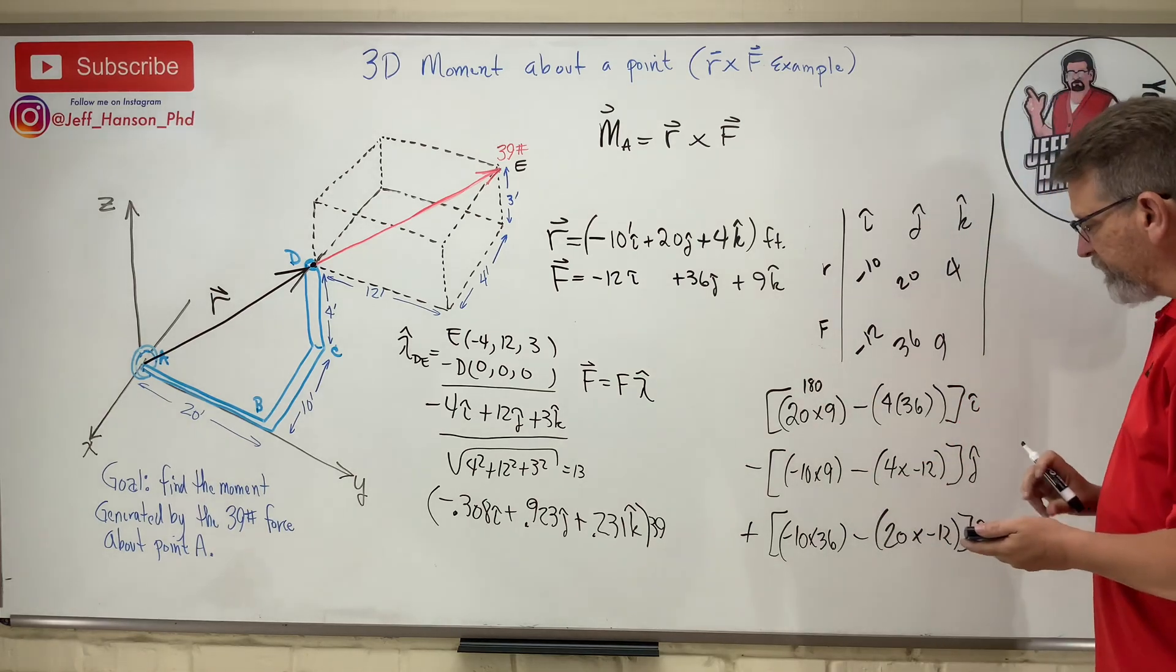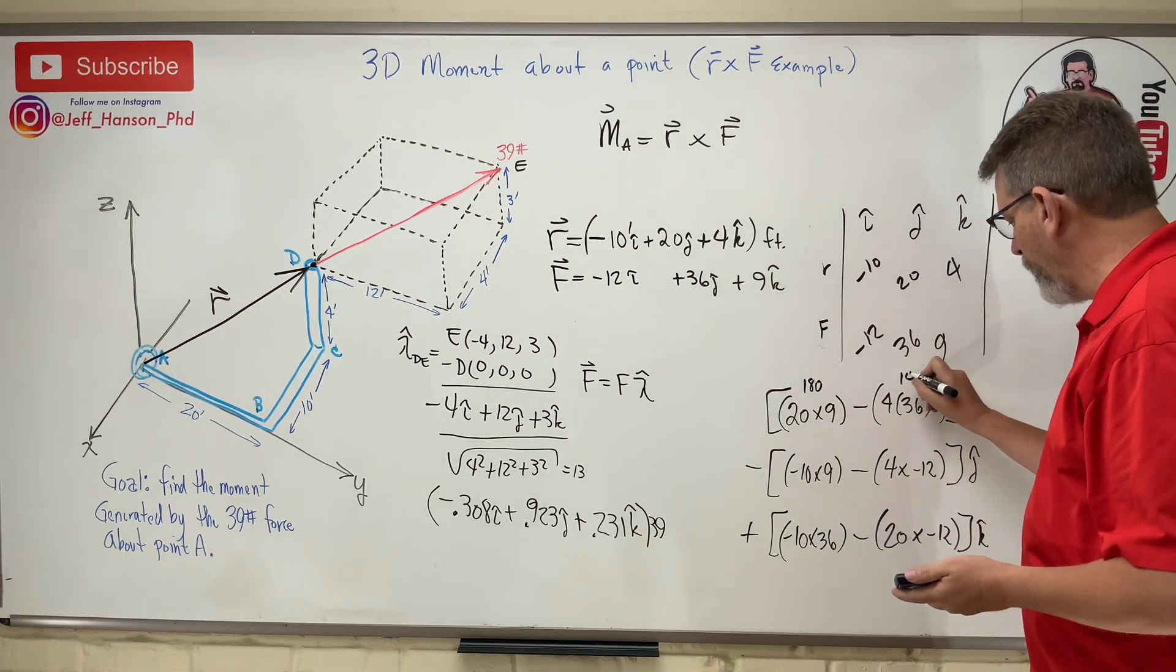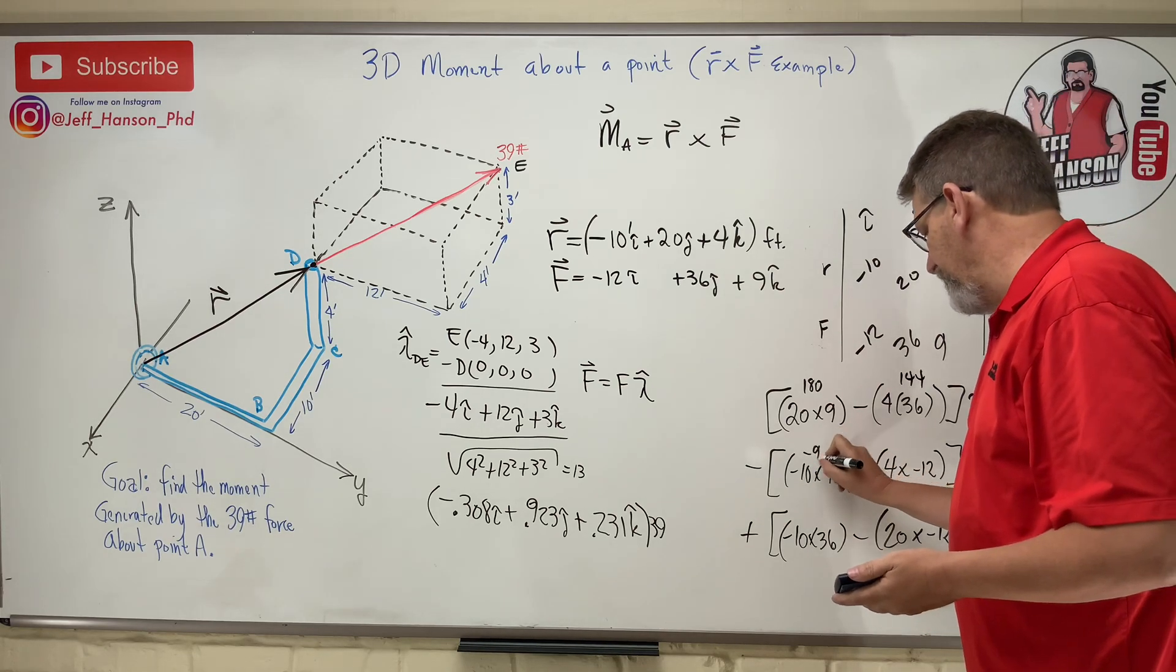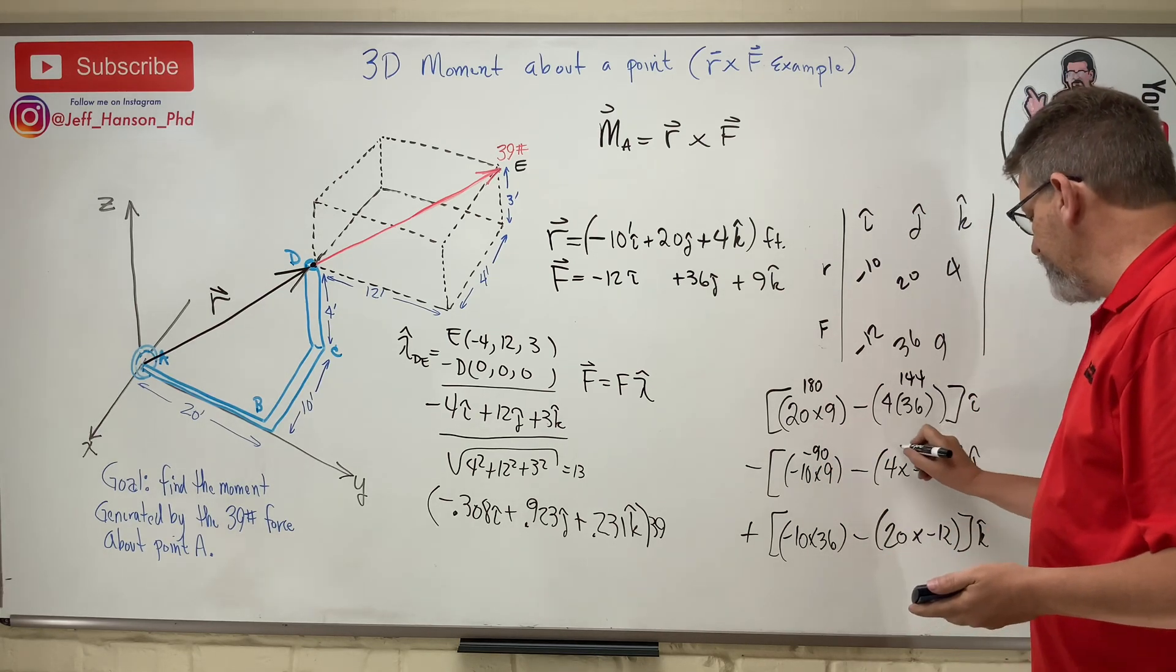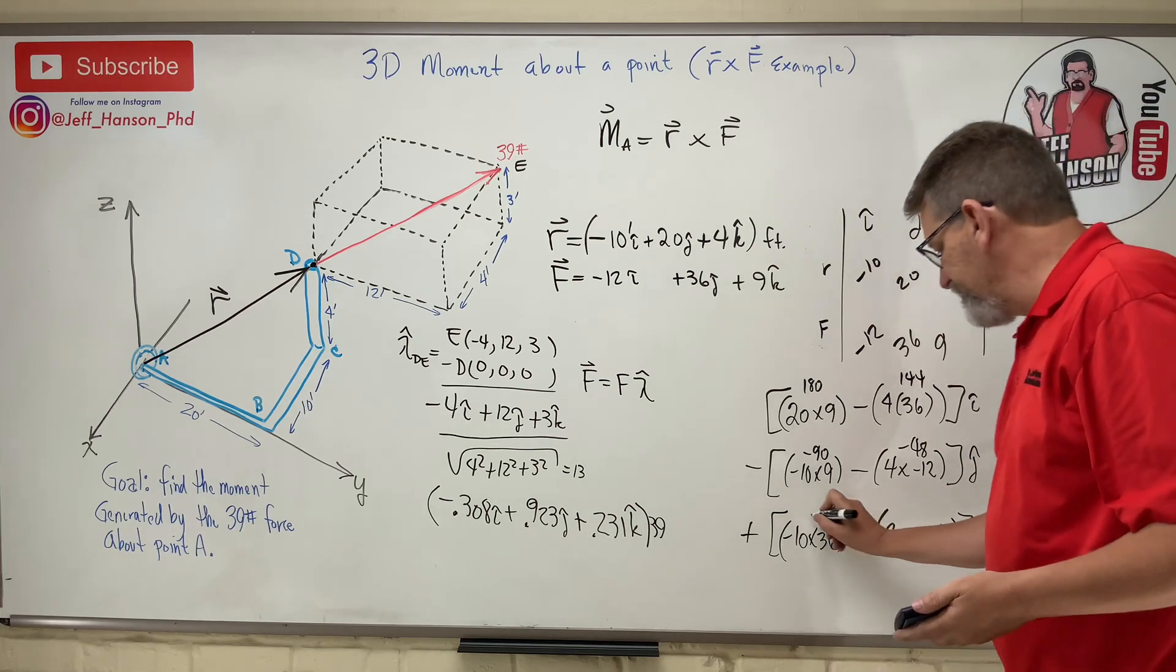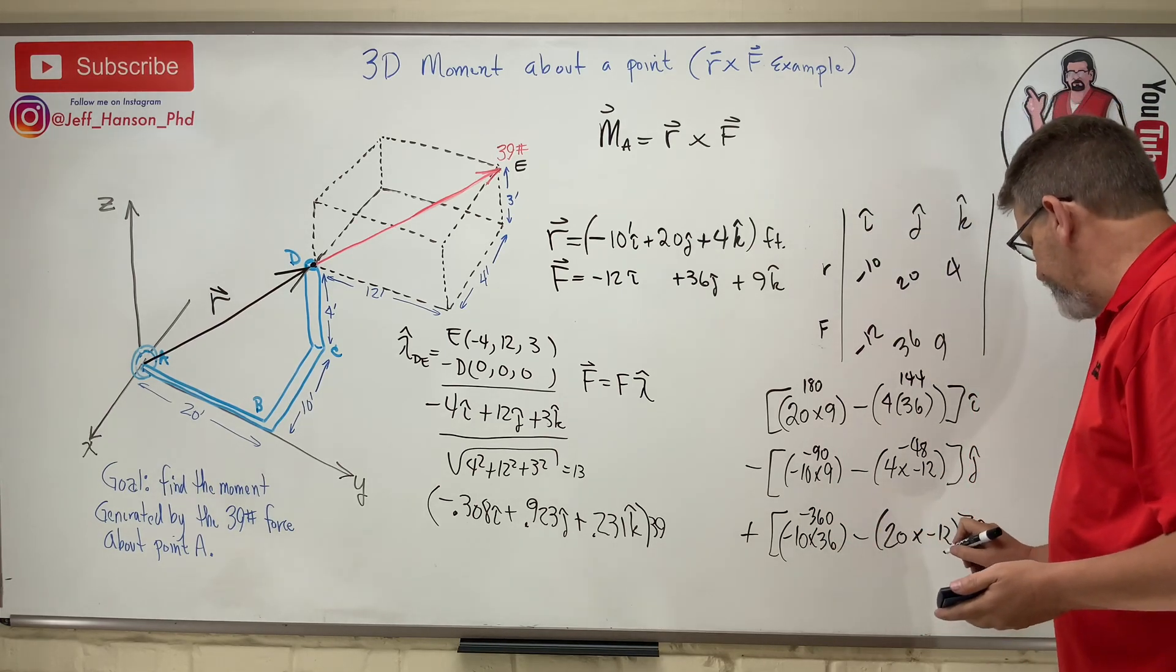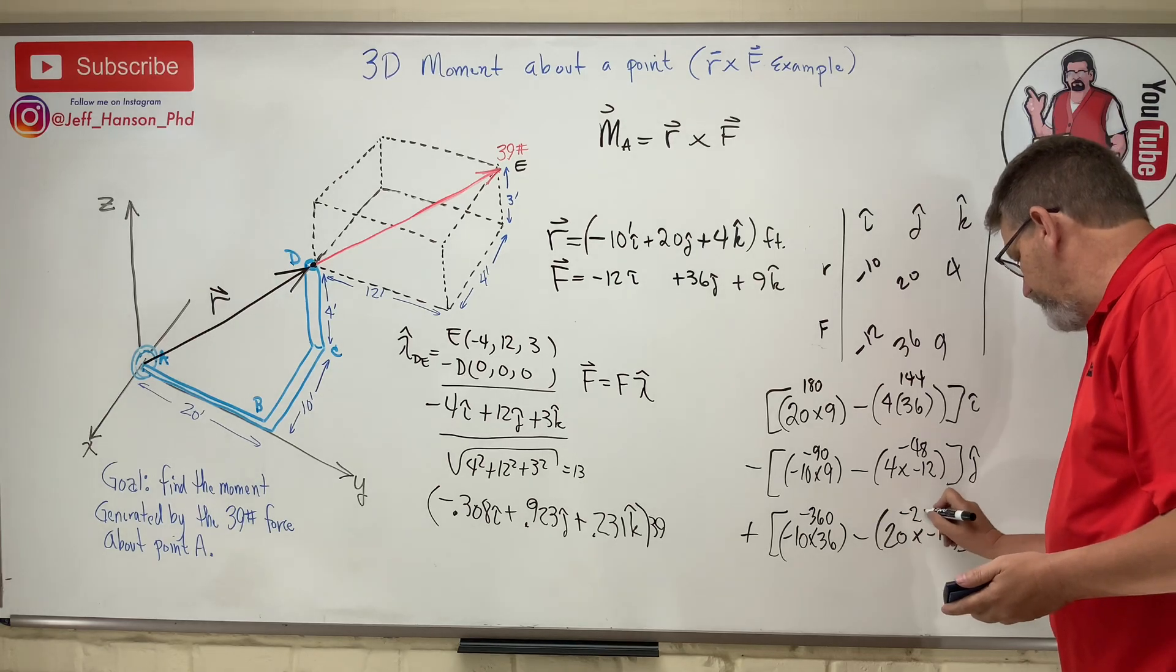That's 180. 4 times 36 is 144. And then this is negative 90, this is negative 48, this is negative 360, and this is negative 240.